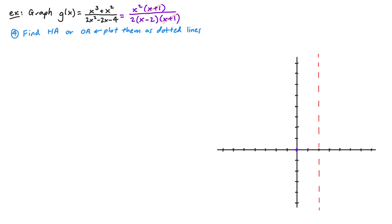Our next step is to find our horizontal or oblique asymptote. Whether we have a horizontal or oblique asymptote depends on the degrees of the numerator and denominator. The degree of the numerator is 3 and the degree of the denominator is 2. Since the numerator has one higher degree than the denominator, we'll have an oblique asymptote, and to find it we need to perform polynomial long division. We'll use the version with the canceled factor.